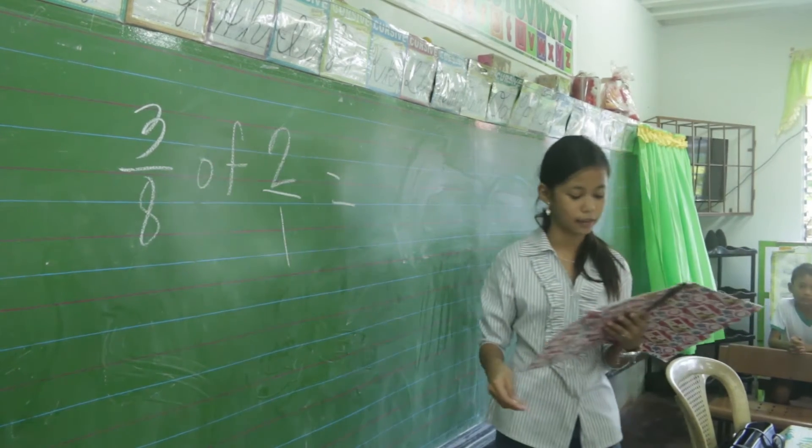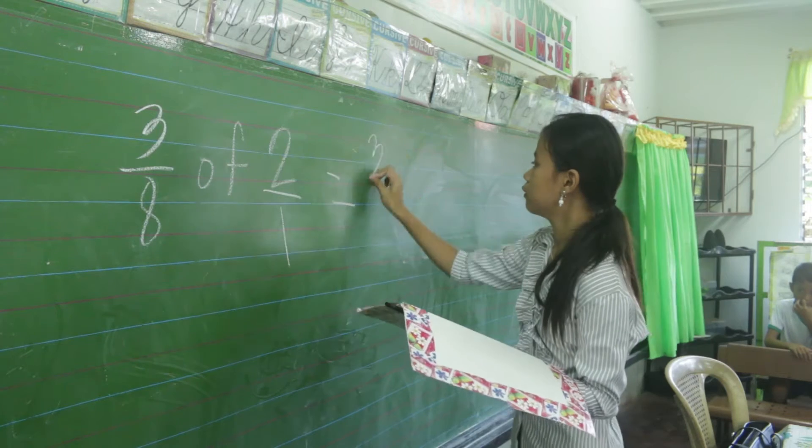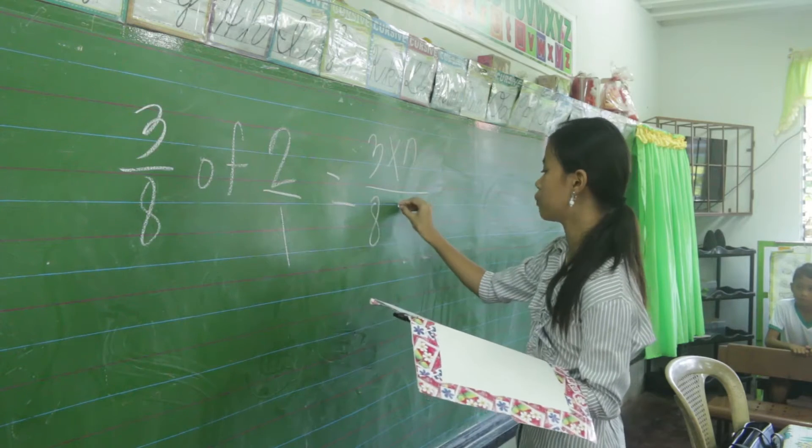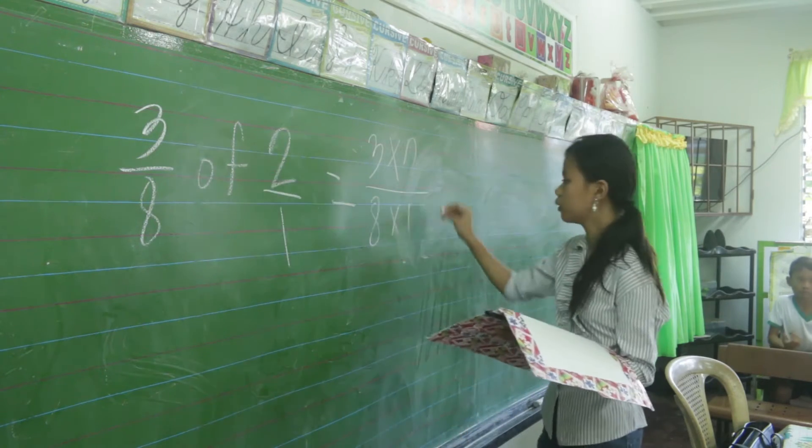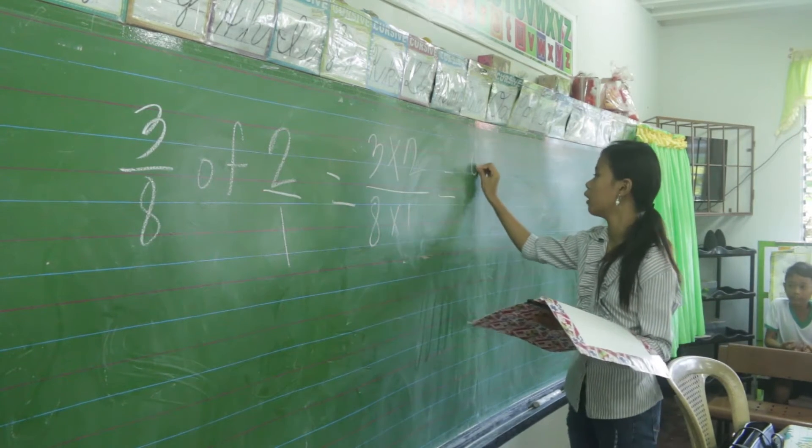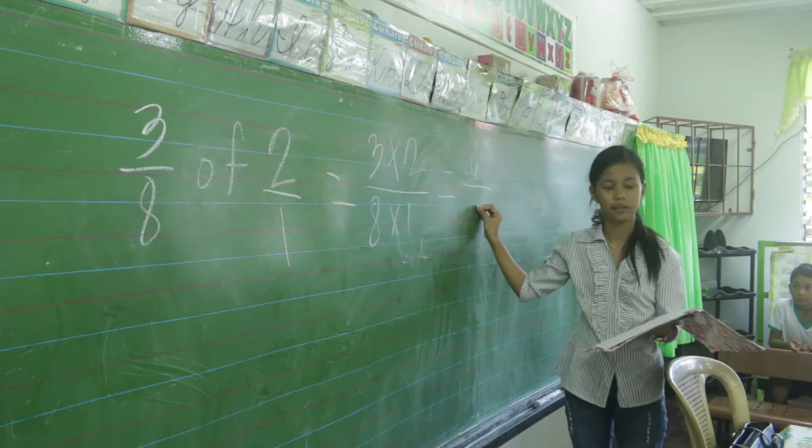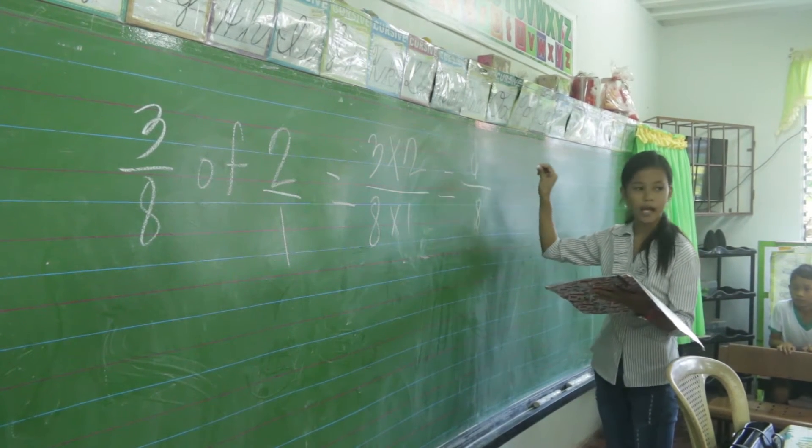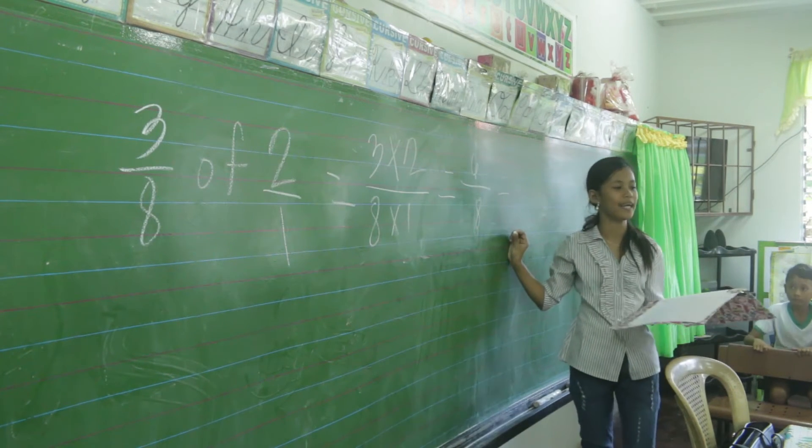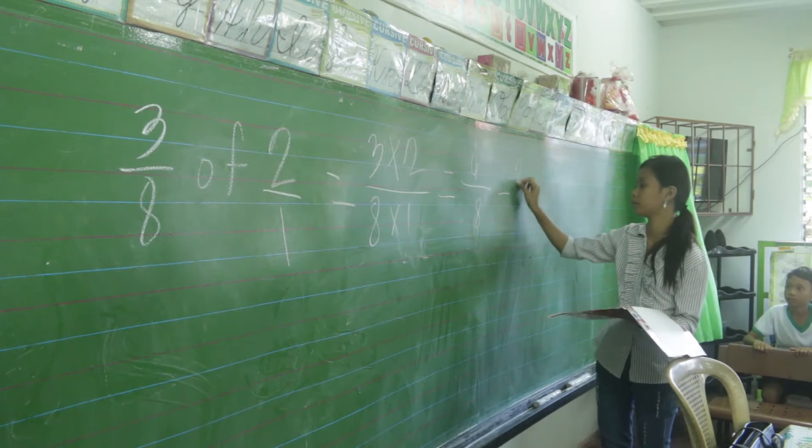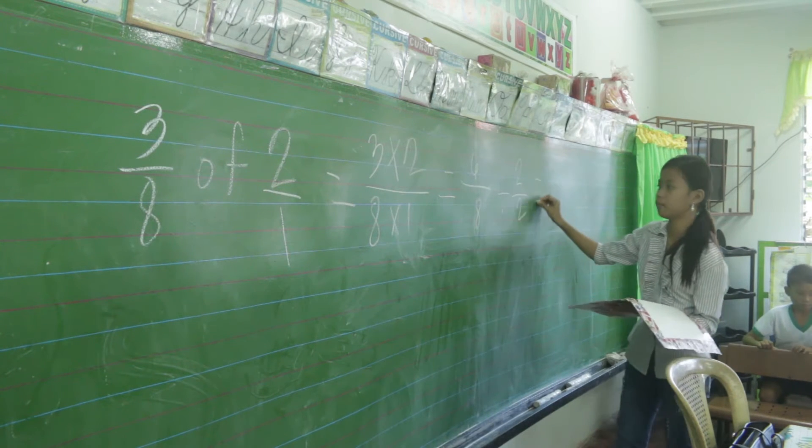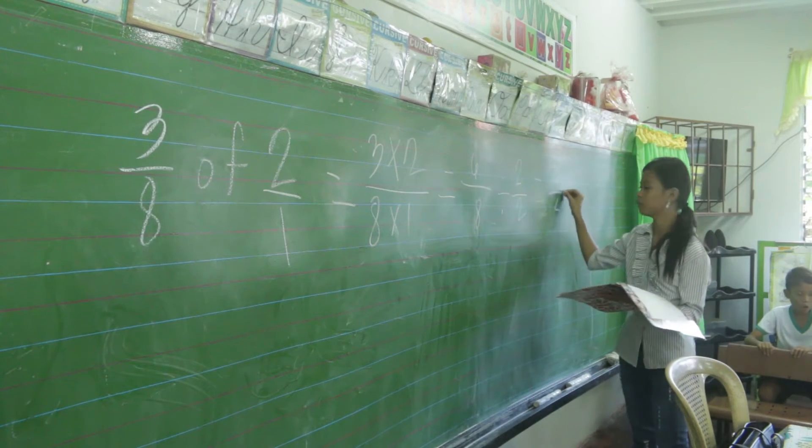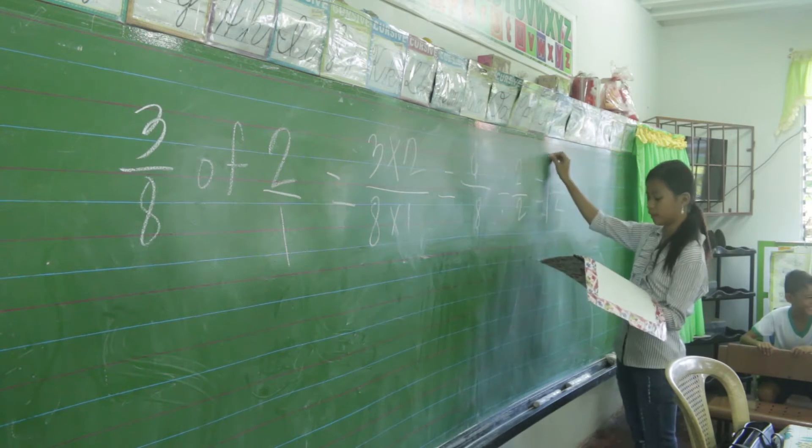Let us answer this. 3 times 2 over 8 times 1. 3 times 2? 6! Over 8 times 1? 8! And it is needed to reduce in lowest term. And the common factor of 6 and 8 is? 2! 6 divided 2? 3! 8 divided 2? 4! Very good! And the answer is 3 over 4.